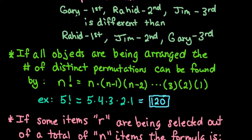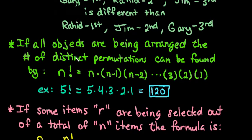So if you are looking at all of the objects being arranged, so like for example if you have ten books that you want to put on a shelf or you have five books that you want to put on a shelf, if you're talking about all of the objects and they're all being arranged in a number of distinct permutations, you can find it by doing n factorial.